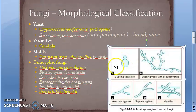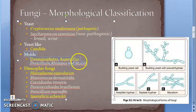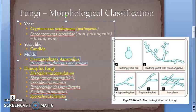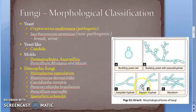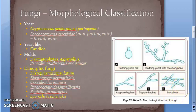Now let's move on to molds. Molds grow as long branching filaments called hyphae. These hyphae can be either septate or non-septate. They grow continuously to form a branching tangled mass called mycelium.